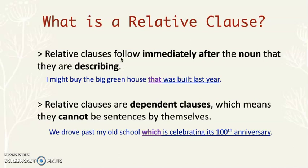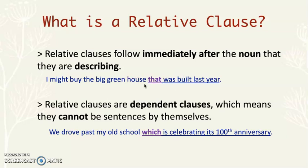Relative clauses follow immediately after the noun that they are describing. For example, 'I might buy the big green house that was built last year.' This relative clause is referring to the house, that's why it comes directly after it. You can't put it first in the sentence because it needs to come directly after the word 'house' since it's talking about the house.